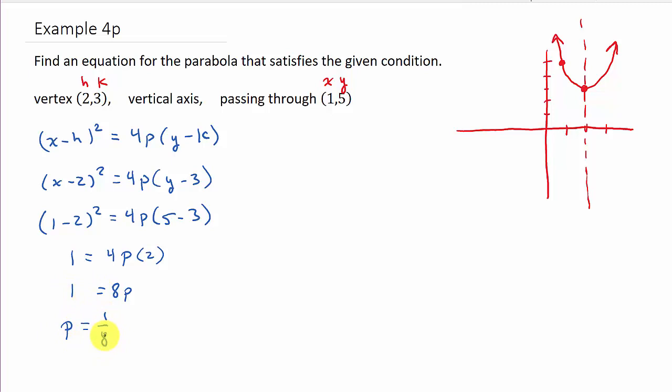And so now I have my equation. See, I've already got the h and k plugged into here. So now I'll plug the 1 eighth in for p, and so I'm going to get x minus 2 squared equals 4 times 1 eighth times y minus 3. And so x minus 2 squared is equal to 1 half times y minus 3. And there's your answer.